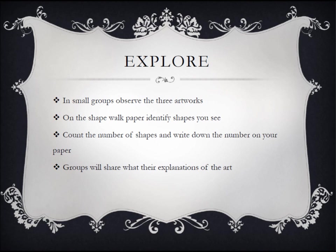In the exploration portion of my lesson, I had the students work in small groups. They were given copies of the three paintings that we had just discussed and observed in the whole group setting. In small groups, they were to use the shape walk paper and write down the shapes that they see and how the artist used them to create the picture.